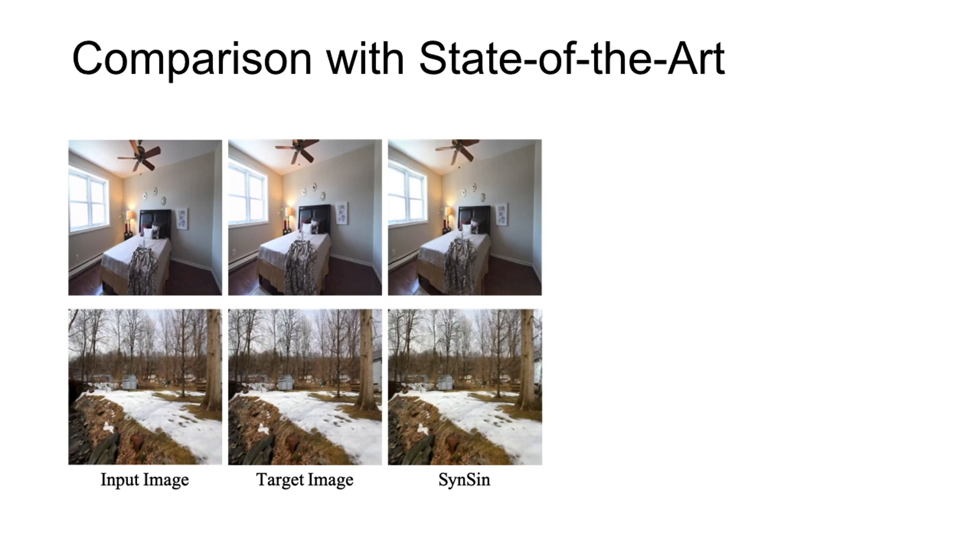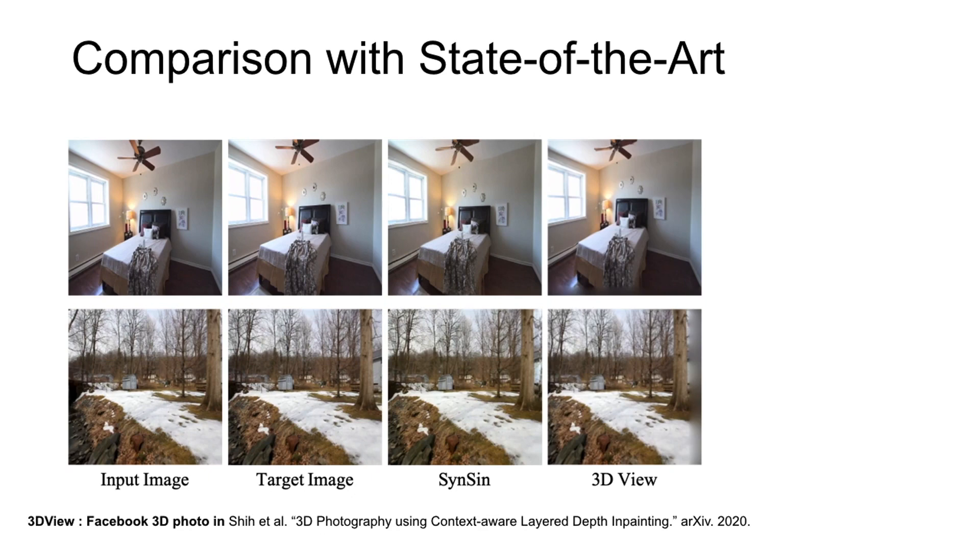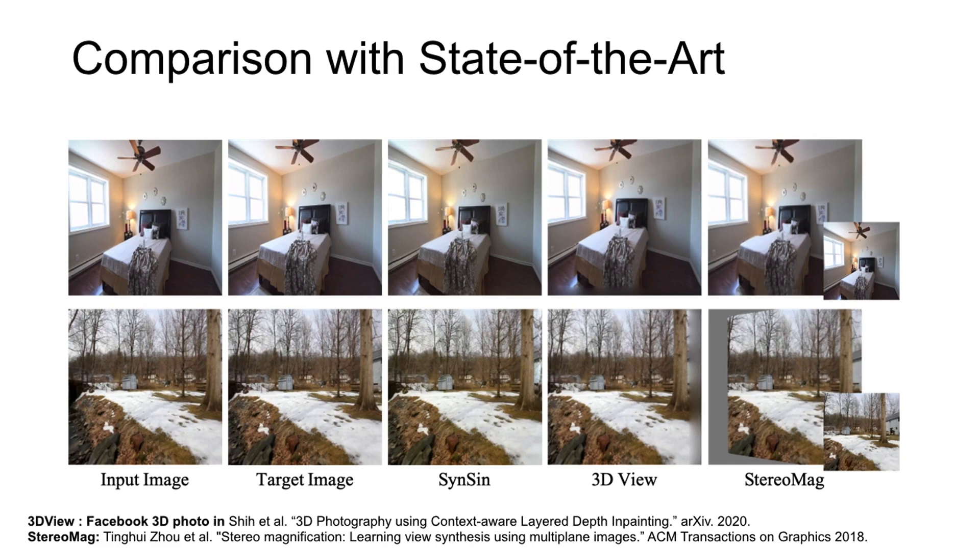We next evaluate our model with respect to two state-of-the-art approaches that use auxiliary input information. However, they exhibit failure cases that ours does not. 3D View uses a depth model pre-trained on ground truth depth maps. It uses a naive, blurry outpainting method. It sometimes predicts erroneous depth as its depth prediction model is trained on a different domain. Stereo Mag uses two input views at test time. It does not outpaint regions unseen by both images.